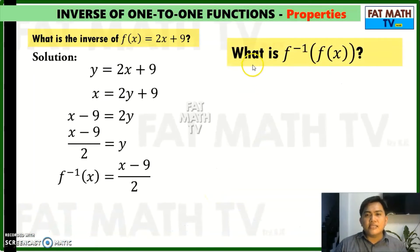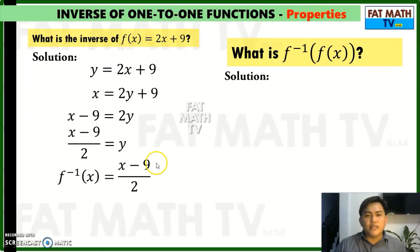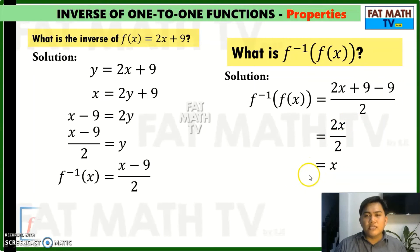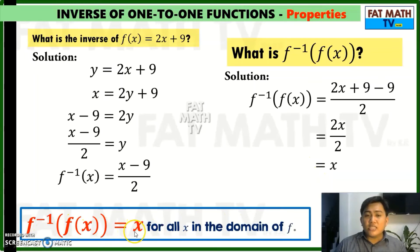Lastly, let us solve f inverse of f of x. In f inverse, we will replace x with f of x, which is 2x plus 9. So we will have 2x plus 9 minus 9 over 2. Since 9 minus 9 is 0, we have 2x over 2, which is equal to x. So f inverse of f of x is also x for all x in the domain of f.